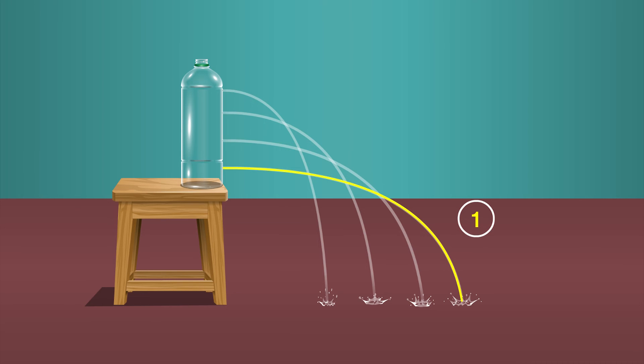As the distance of hole from the bottom increases, the horizontal distance covered by streams of water decreases.